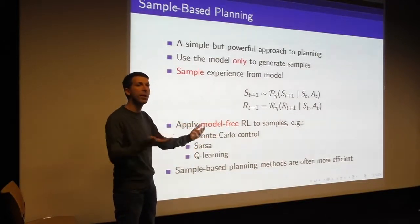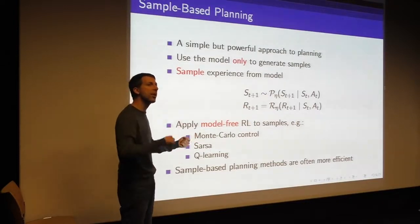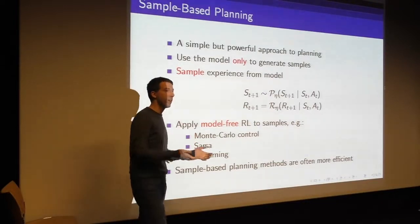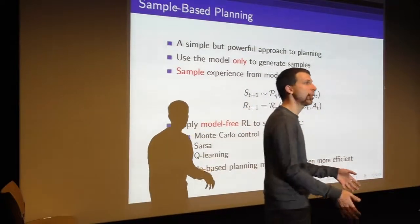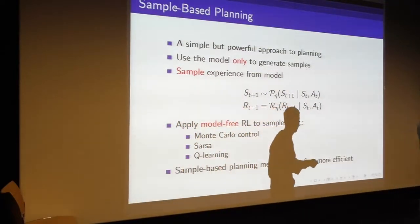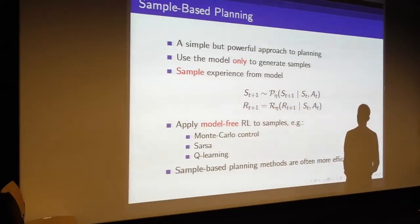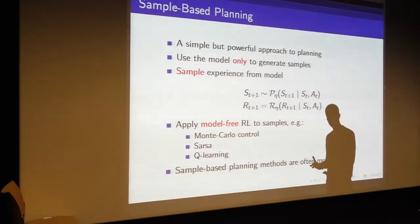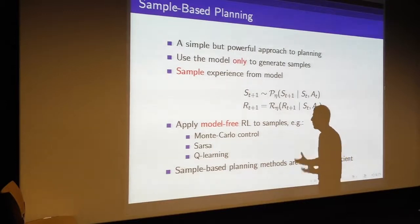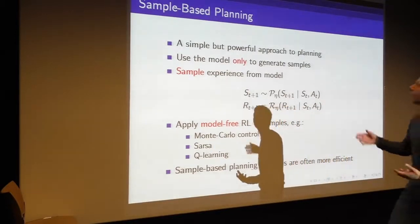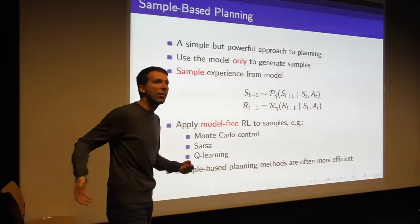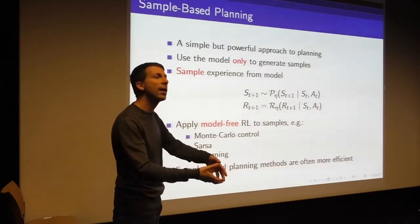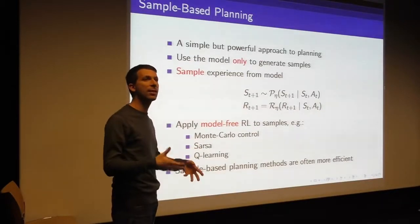We know how to learn from sample trajectories. We know how to learn from samples where I've randomly seen what happens if I interact with my environment and the wind blows me around and I take this whole sequence of actions and end up over here and get some sequence of rewards. That's the problem we've been studying all along, which is model-free reinforcement learning. The main idea of sample-based planning is to just use the model to generate samples and then apply model-free reinforcement learning to these samples.